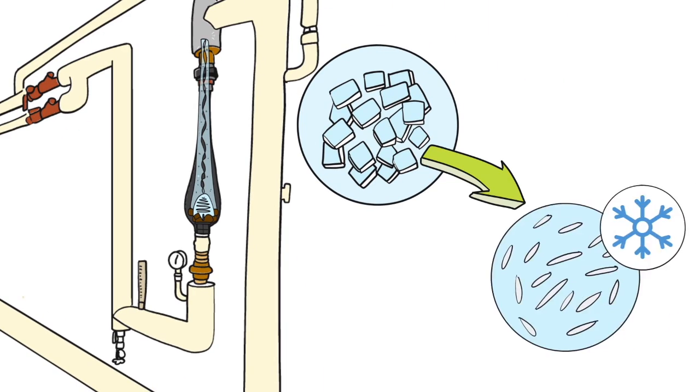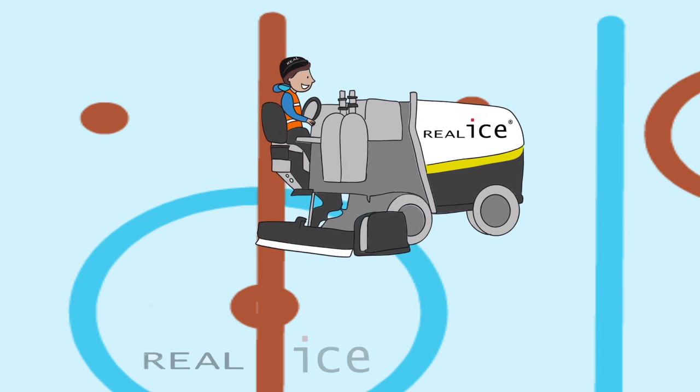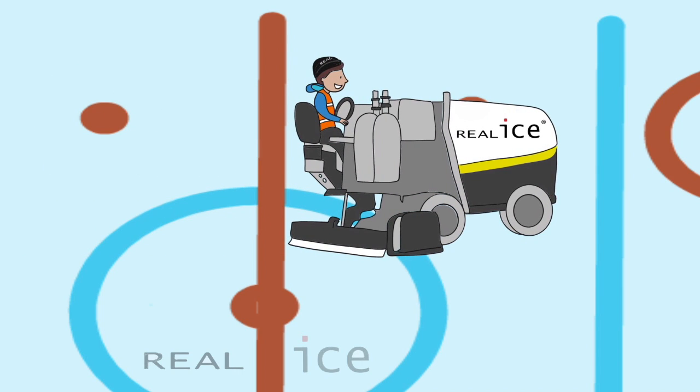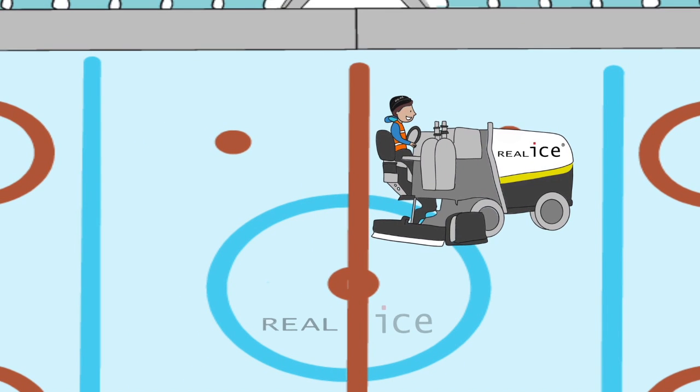They're no longer able to cling to each other or to metal surfaces like the inside of the resurfacer's flood tank. These ice crystals move to the surface of the ice sheet. Frank simply dry shaves the ice to easily remove the crystals.